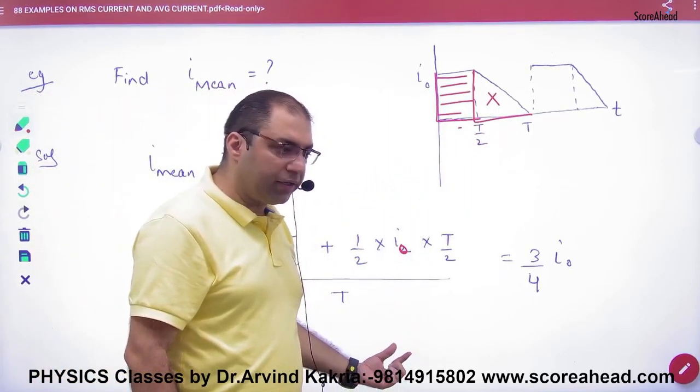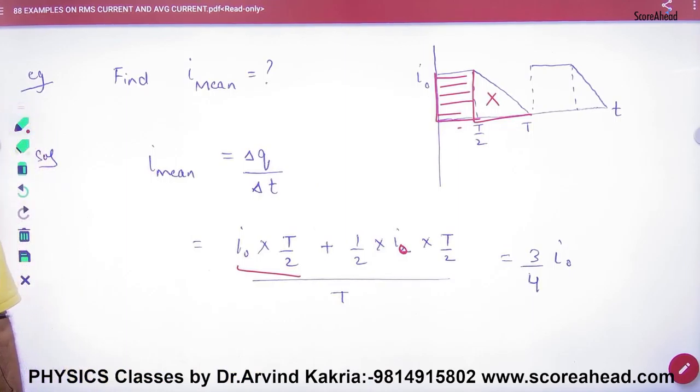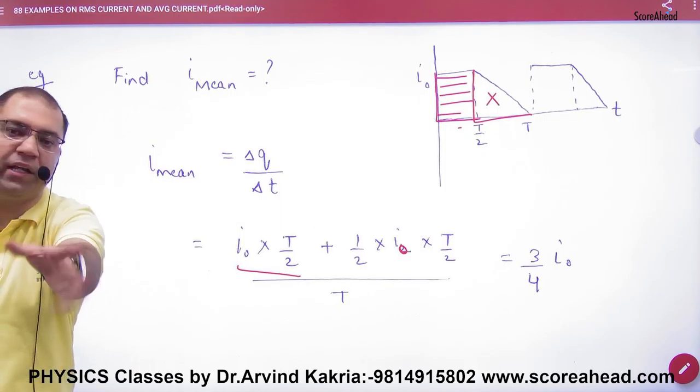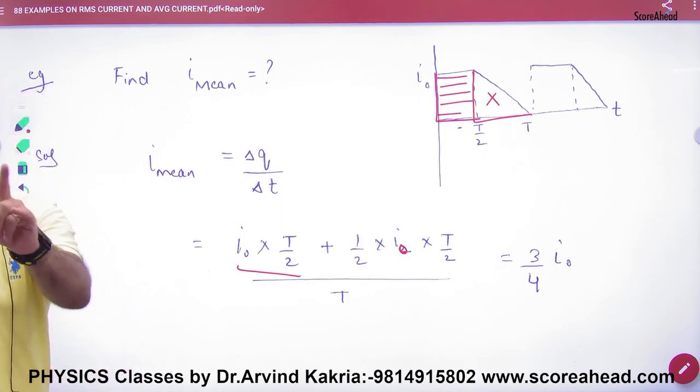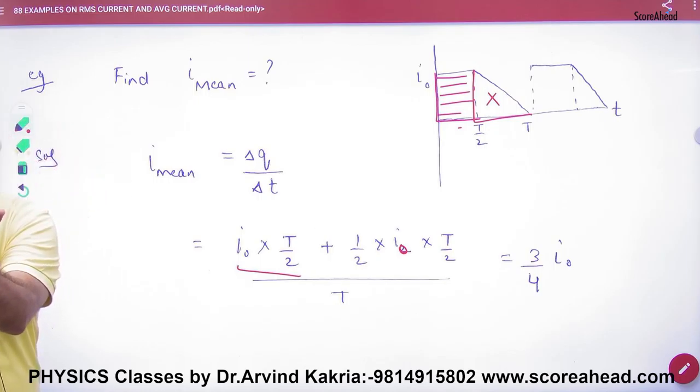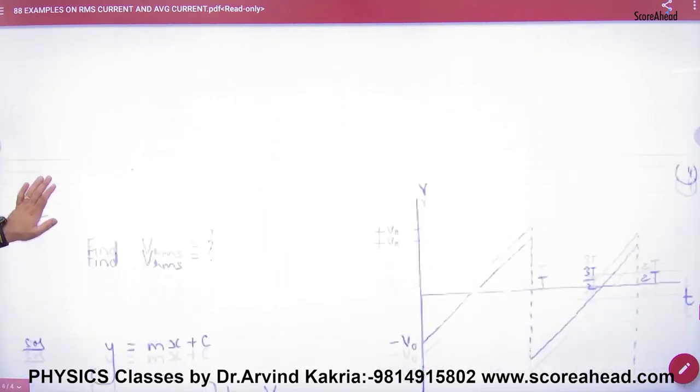Divided by total time t. t, t cancel answer. So the mean current, you have to remove total charge by total time, and in total charge area under the graph you have to remove the answer.